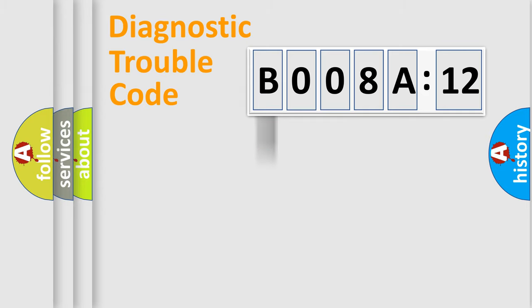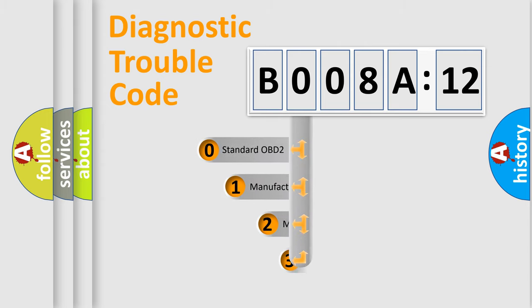Powertrain, body, chassis, network. This distribution is defined in the first character code.